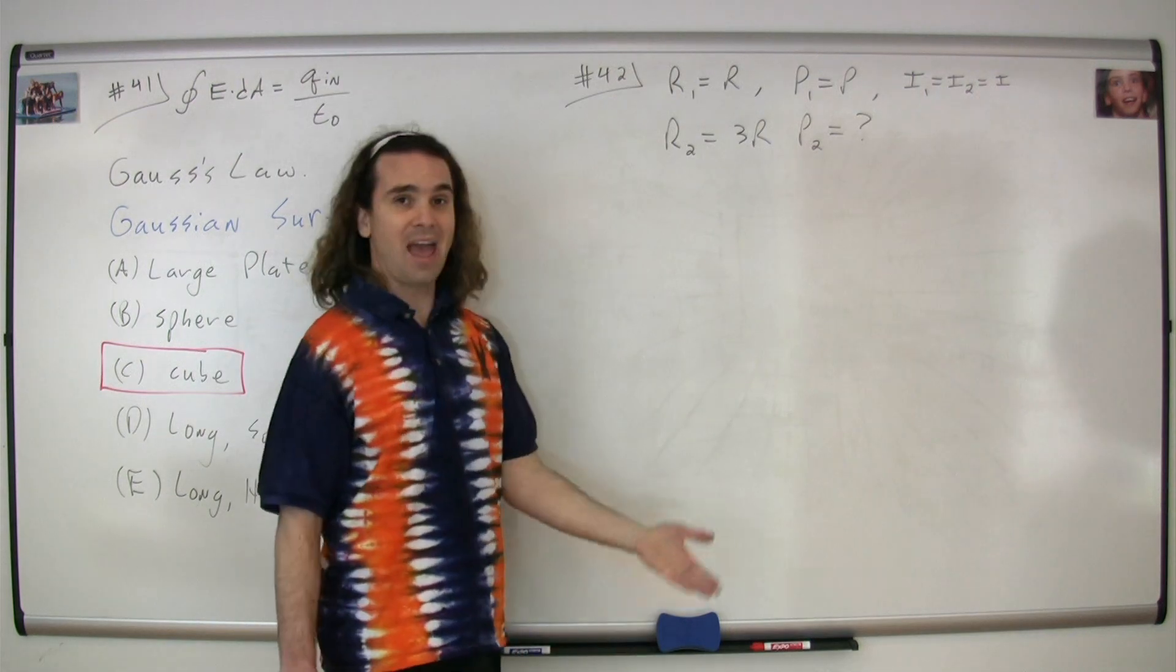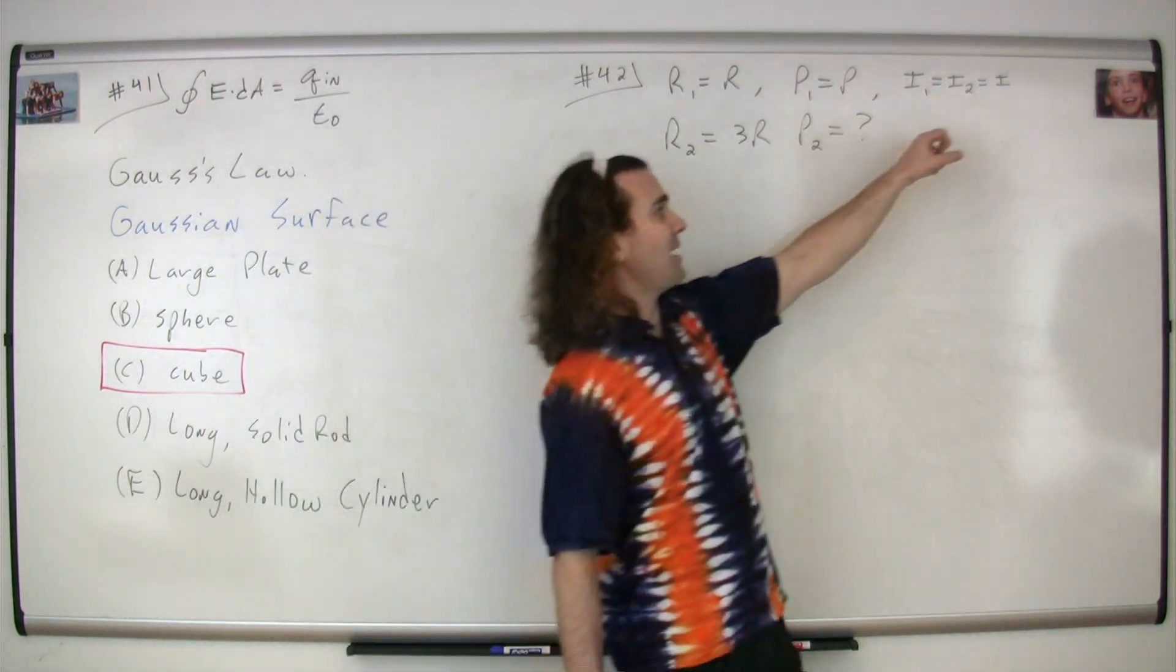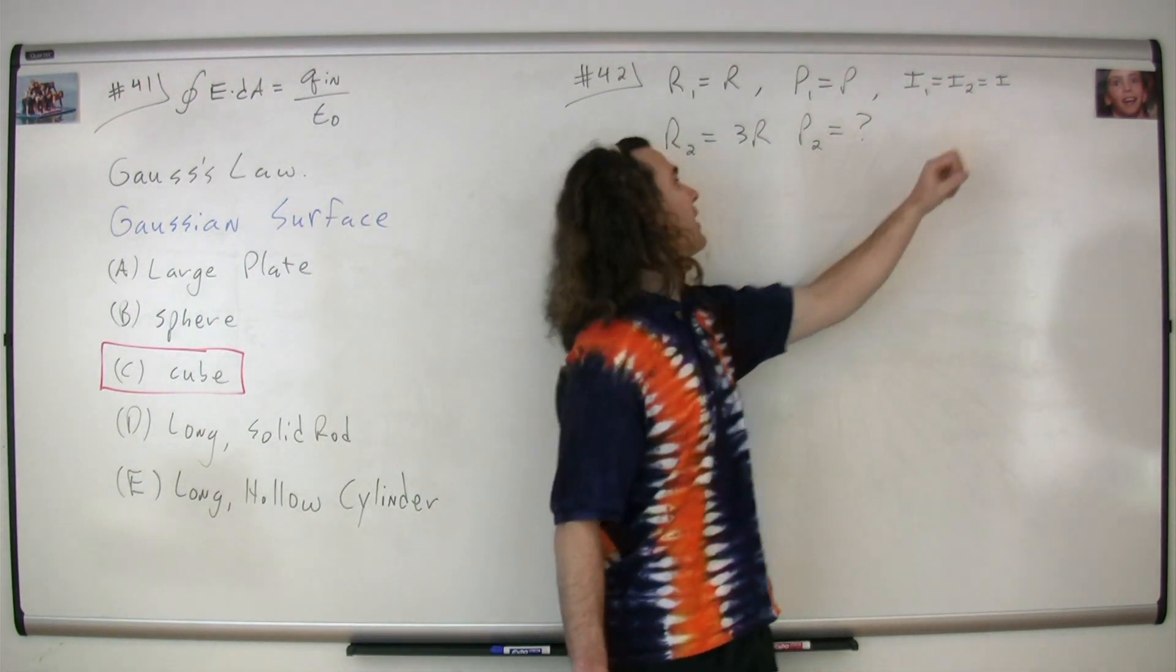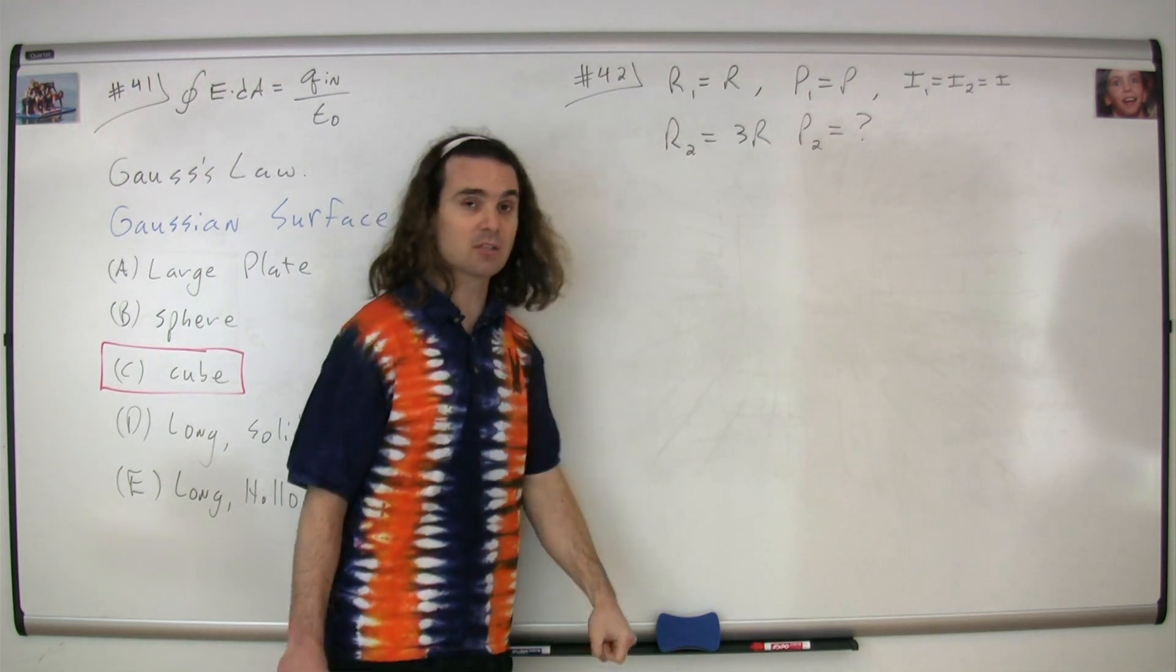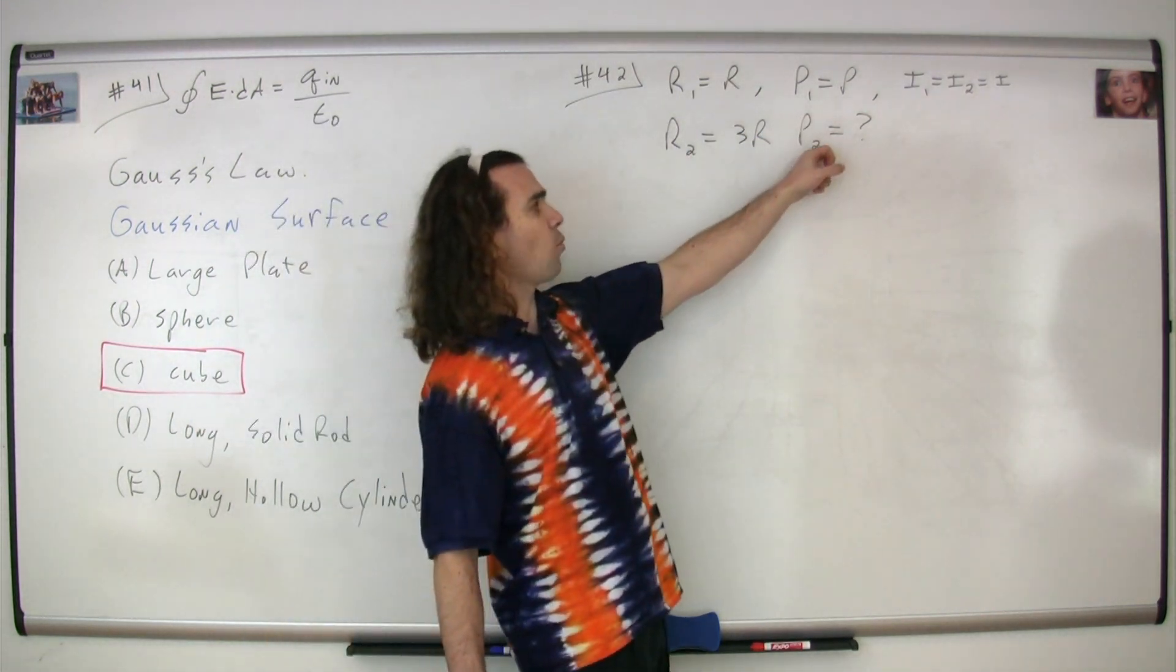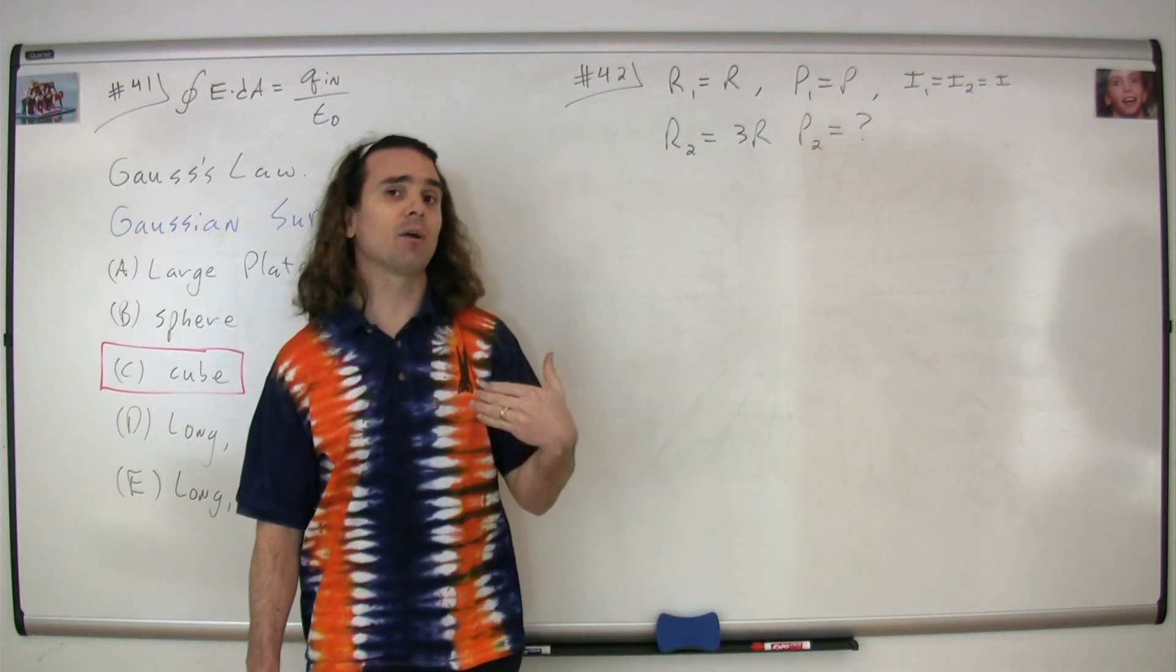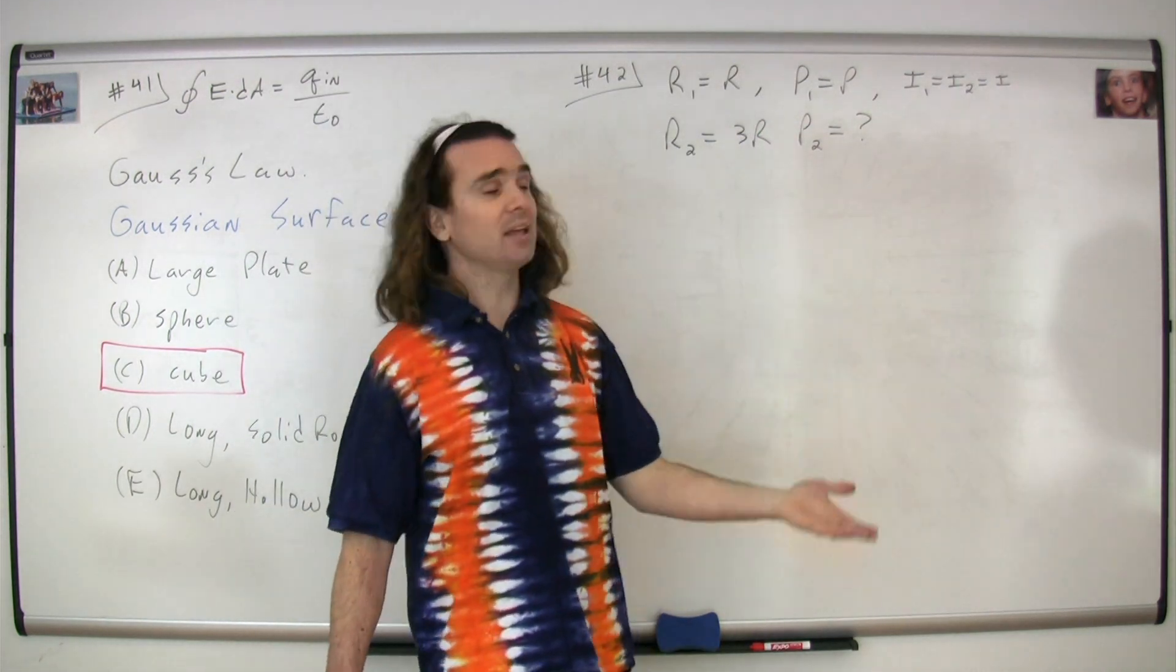We're now going to have a second wire. We're going to pass the same current through that wire, and that second wire has a resistance 3R, or 3 times the resistance of the first wire. The question is what is the power dissipated by wire 2.